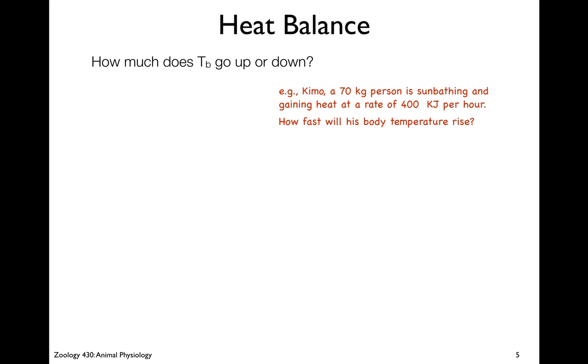So how much does the body go up or down for a given amount of heat? Let's look at another example. We have our friend Kimo again. This time he is a 70 kilogram human being who's been sunbathing and gaining heat at a rate of 400 kilojoules per hour. How fast is his body temperature going to rise? He's clearly not in heat balance. We'll use the specific heat of water equation. We plug in for q 400 kilojoules per hour, and for the specific heat constant we use 4.184 joules per gram degree Celsius. Mass is 70 kilos times the change in temperature. What we want to know is the change in temperature, so we solve for delta T.